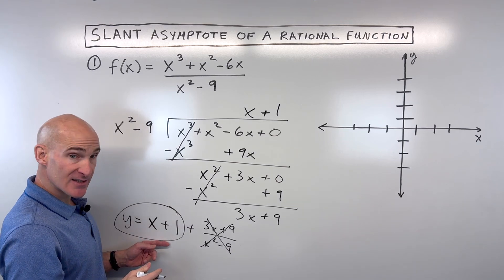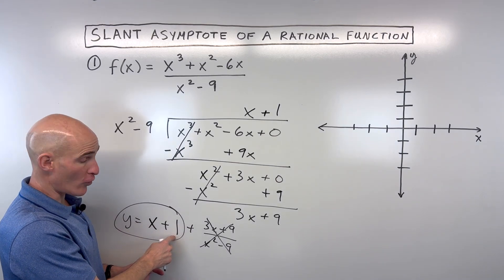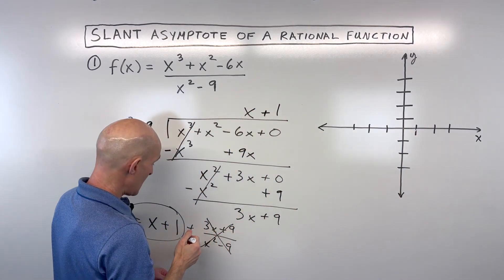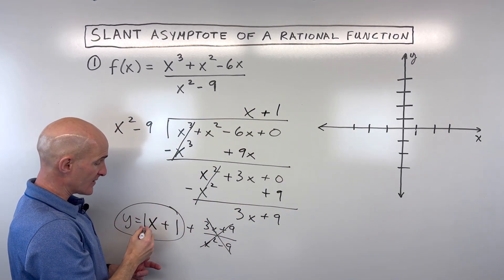And if we were to graph that, you can see this is in the slope-intercept form, like our y equals mx plus b form. The y-intercept is 1, that crosses the y-axis right here at 1. And the slope is 1. See, this is 1x.